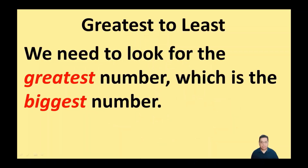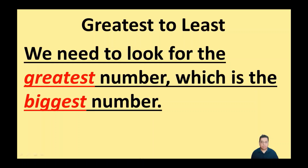Let's look at greatest to least first. The definition I'm going to use says we need to look for the greatest number, which is the biggest number. Greatest and biggest are the same because it means you want the bigger number, the greatest number, the larger number.